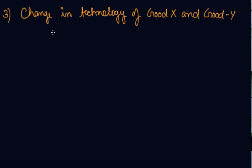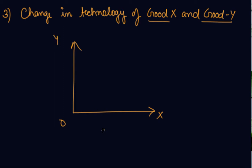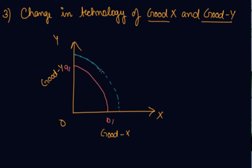When you change the technology of both good X and good Y, what will happen to your production possibility curve? The production of both good X and good Y will increase simultaneously. So your production possibility curve will shift rightward in parallel — there will be an increase in the production of both X and Y, and there will be a rightward shift in the PPC curve.